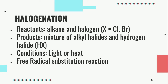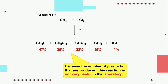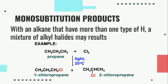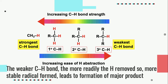The type of reaction of halogenation of alkane is free radical substitution reaction. Five possible forms of products are formed during this reaction. The variety of alkyl halide produced is due to the different types of hydrogen present in the alkane. The weaker the C-H bond, the more readily the hydrogen is removed. So, the more stable radical formed leads to formation of the major product.